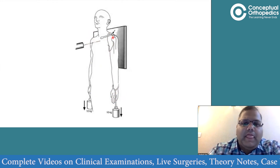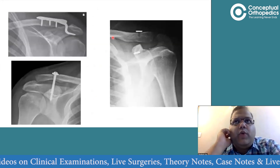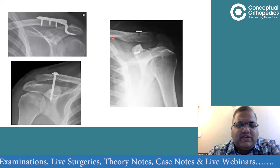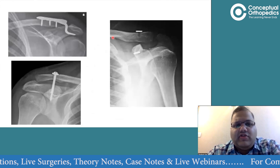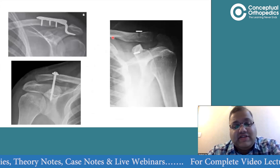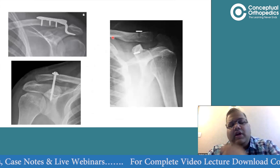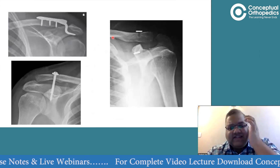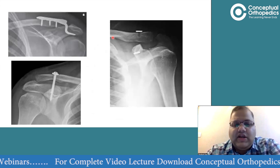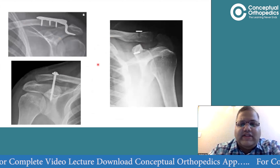The Rockwood classification: Type 1 is a sprain; Type 2 is about 25% displacement; Type 3 is 25-100% displacement; Type 4 is posterior displacement; Type 5 is again superior but more than 200% displacement; Type 6 is inferior dislocation, which is very rare. The classification or identifying images showing each type may be asked in the exam.